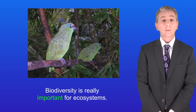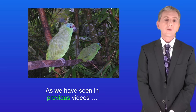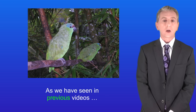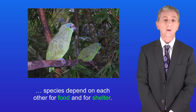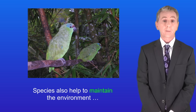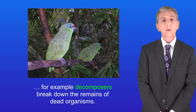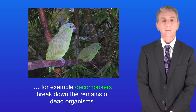Biodiversity is really important for ecosystems. As we've seen in previous videos, species depend on each other for food and for shelter. Species also help to maintain the environment — for example, decomposers break down the remains of dead organisms.